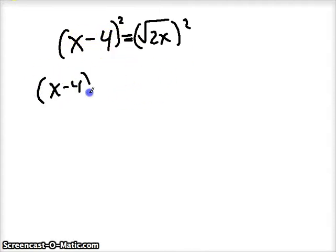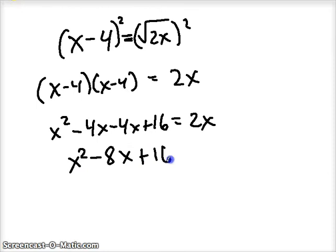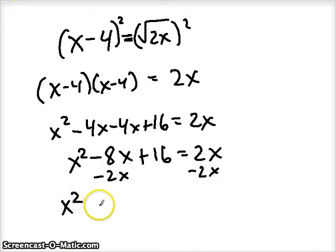So we get x minus 4 times x minus 4. We've got to FOIL that. On the right side, we squared a square root, and so we were left with 2x. Let's FOIL. We get x squared minus 4x minus 4x plus 16 still equals 2x. Combine your middle terms, we get negative 8x. So x squared minus 8x plus 16 equals 2x. We're solving, so we want everything on one side, so I'm going to subtract 2x from both sides. When I do that, I get x squared minus 10x plus 16 equals 0.